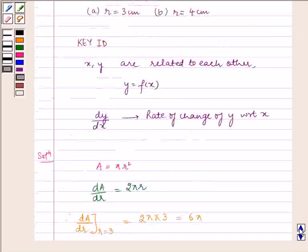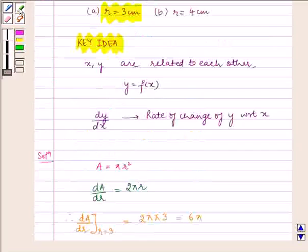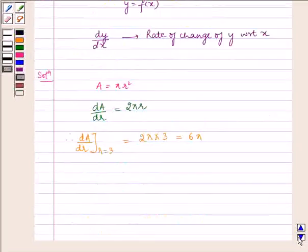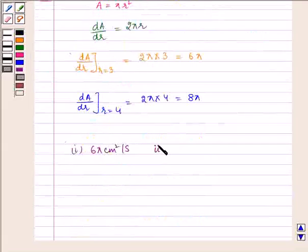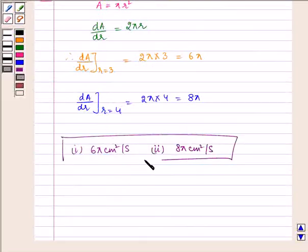Similarly, for r = 4 cm, the area is increasing at the rate of 8π cm² per second, which is the required answer.